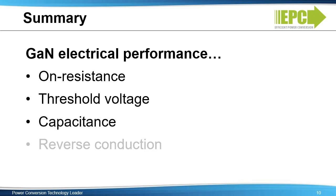Lower capacitances enable faster switching. Because there are no minority carriers involved in conduction in an enhancement mode GAN transistor, there is no reverse recovery charge, or QRR — QRR is zero — which is a significant additional advantage compared with power MOSFETs.